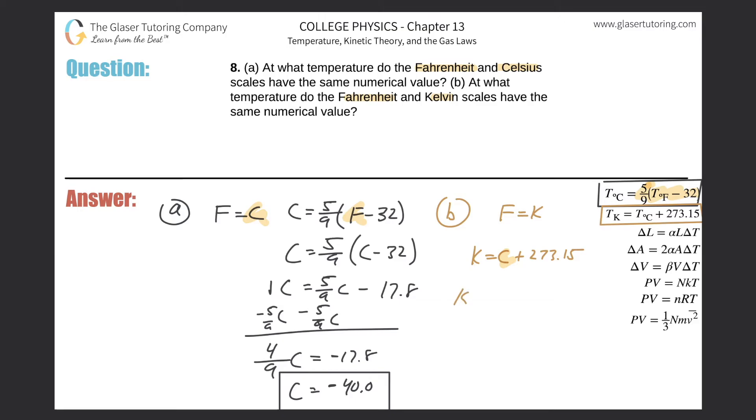So now we have the Kelvin temperature being equal to then five ninths, multiplied then by the Fahrenheit temperature minus 32, minus 32, plus then the 273.15. Not minus, I think I said minus, but plus. So now all we need to do now is do the same thing. F is equal to K.